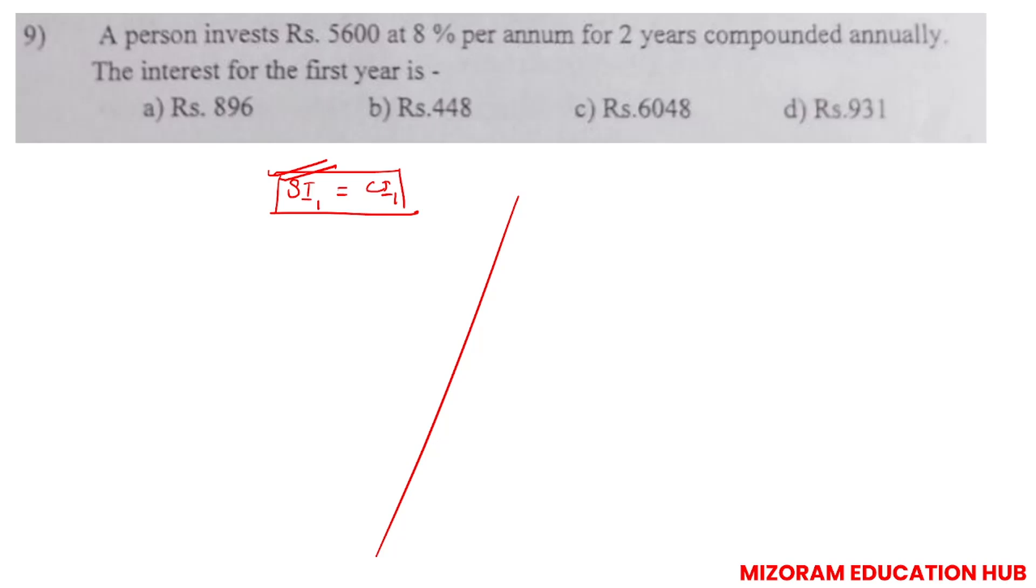There was a minor mistake in the last video about SI for two years. Now, SI for one year - when we want to calculate, then principle is 5600, rate is 8 percent, and time will be one year for the first year. So SI equals principle times rate times time divided by 100. 56 times 8 - 8 times 6 are 48, so 448 is correct answer.